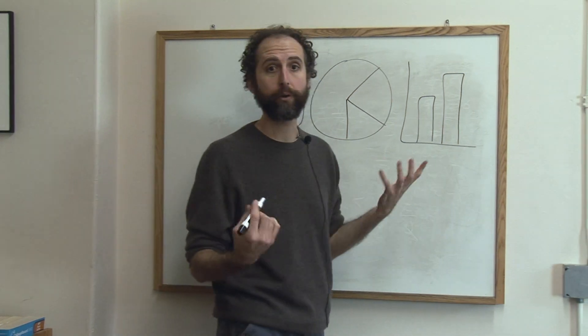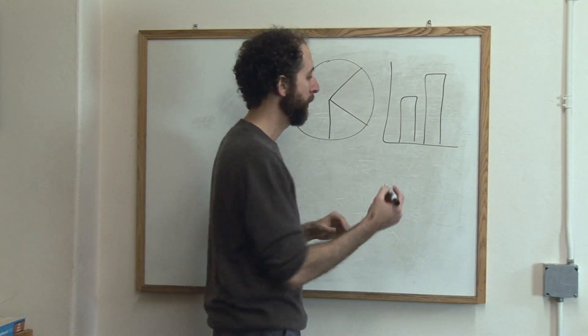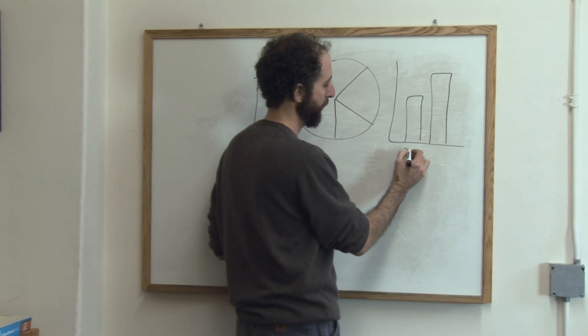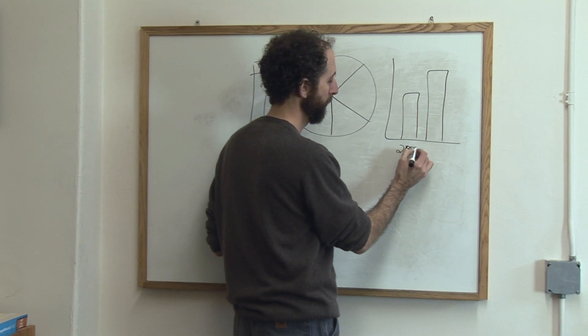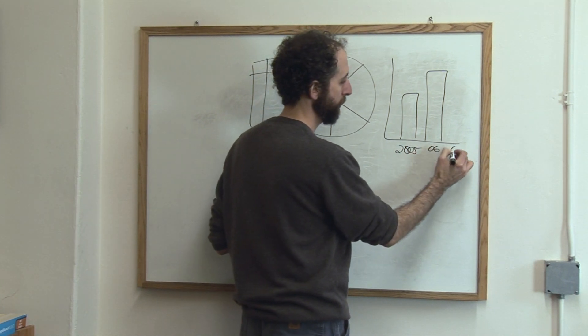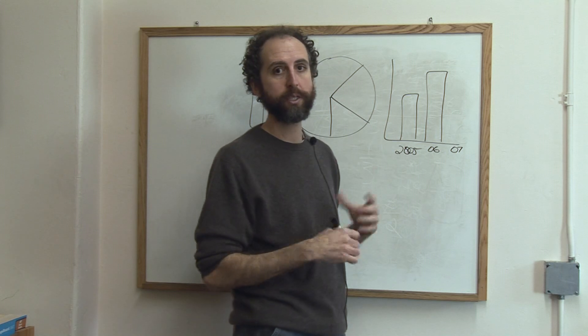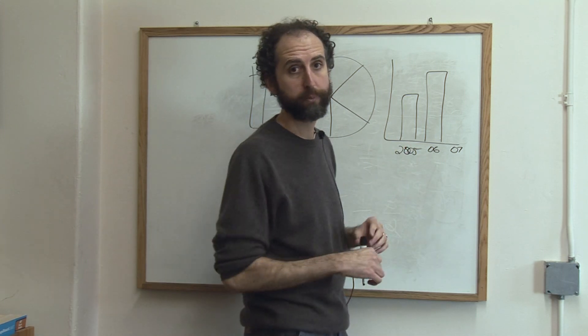So let's say you wanted to show that one year in Aspen had very little snow. So let's say this is 2005, this is 2006, 2007. Let's say 2007 was a low snow year. Let's just make it up.